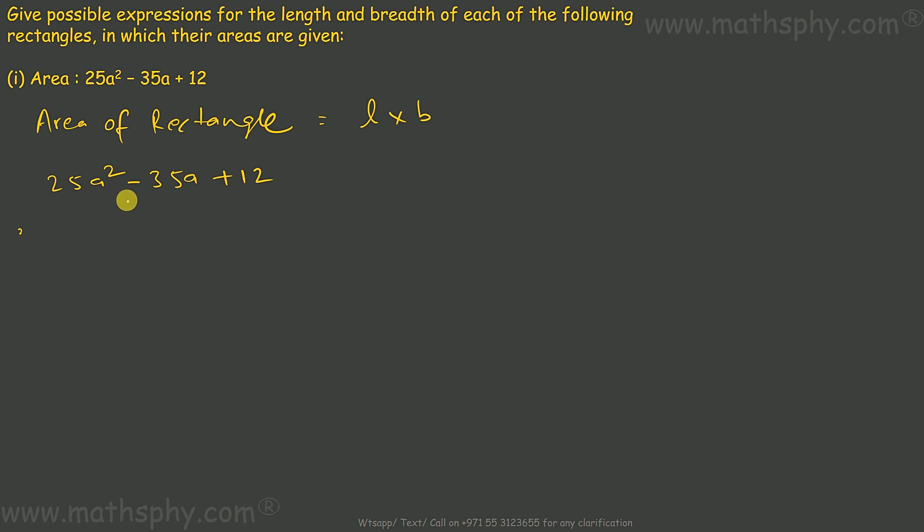I need to split middle term as a plus b equals to negative 35a and ab equals to 25 into 12, 300a squared. Let's see if I break 300, I factorize it.